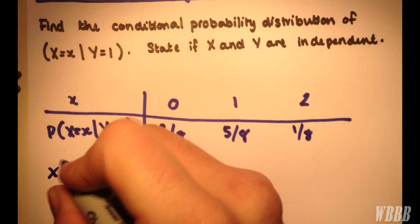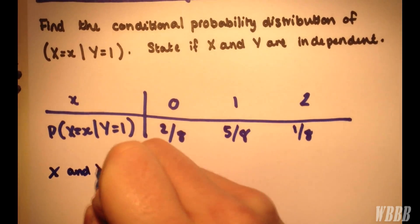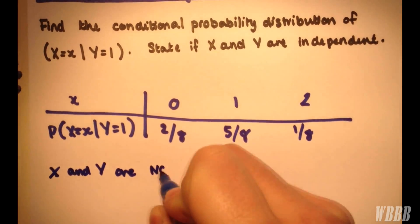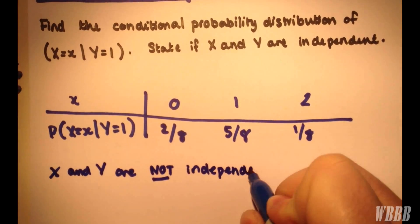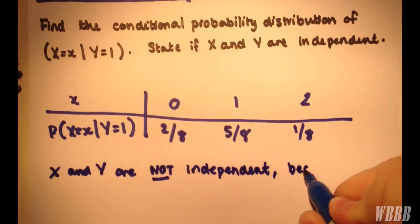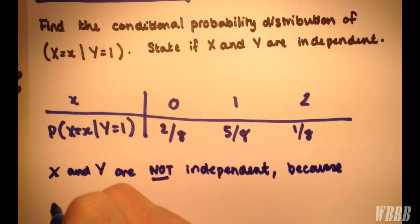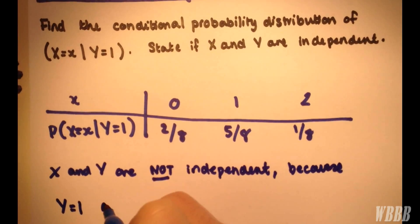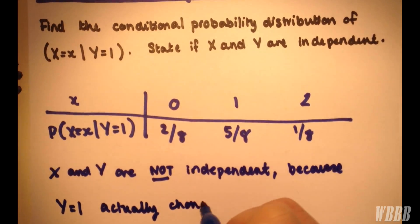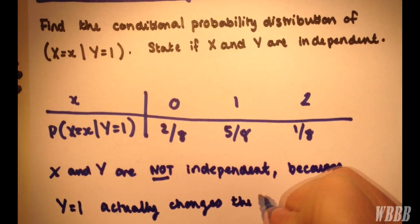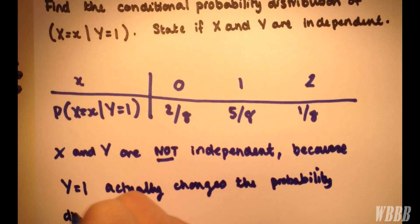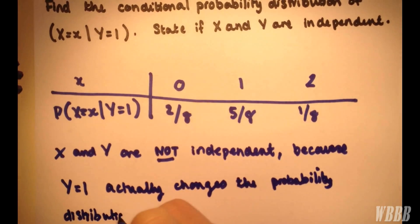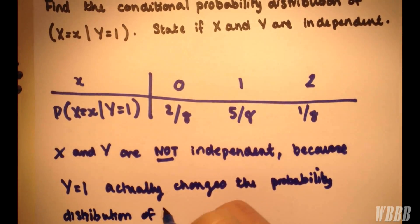we write X and Y are not independent because Y equals 1 actually changes the probability distribution of X.